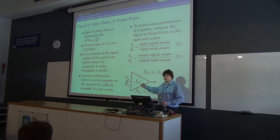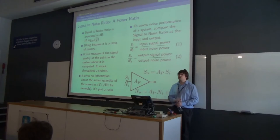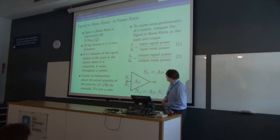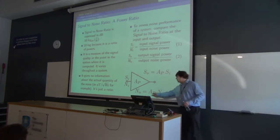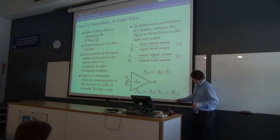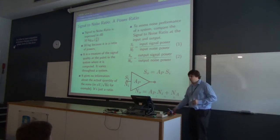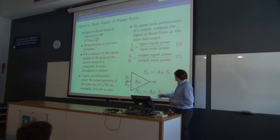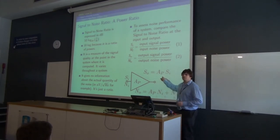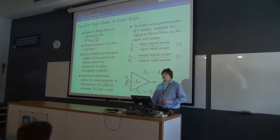Si is the signal input power, Ni is the noise input power — that's the noise that enters the system from the source. The noise output NO equals the power gain of the system AP times the noise input from the source. If it's a resistive source, it will be 4KTRF. This is all in the last lecture's notes. Plus the noise that the amplifier adds, NA — A for amplifier, or A for adds if you prefer. The signal output is the signal input times the power gain. Signals measured in watts, noise measured in watts per hertz if we know the bandwidth.